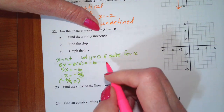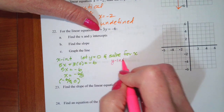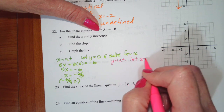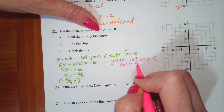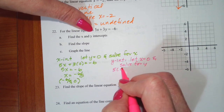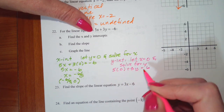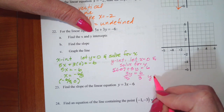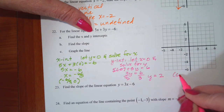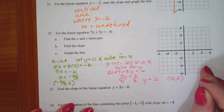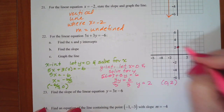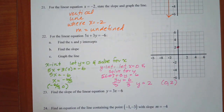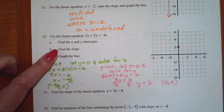For the y-intercept, let x equal 0 and solve for y. So 5 times 0 plus 3y equals negative 6, giving 3y equals negative 6, and y equals negative 2. So the y-intercept is 0, negative 2. Negative 6 fifths is really hard to graph, so I want to find the slope and convert to slope-intercept form.